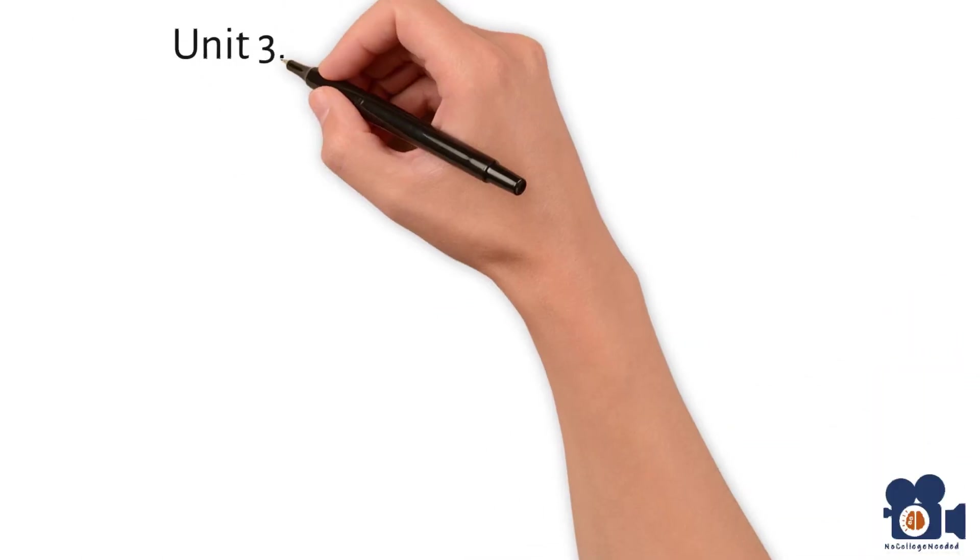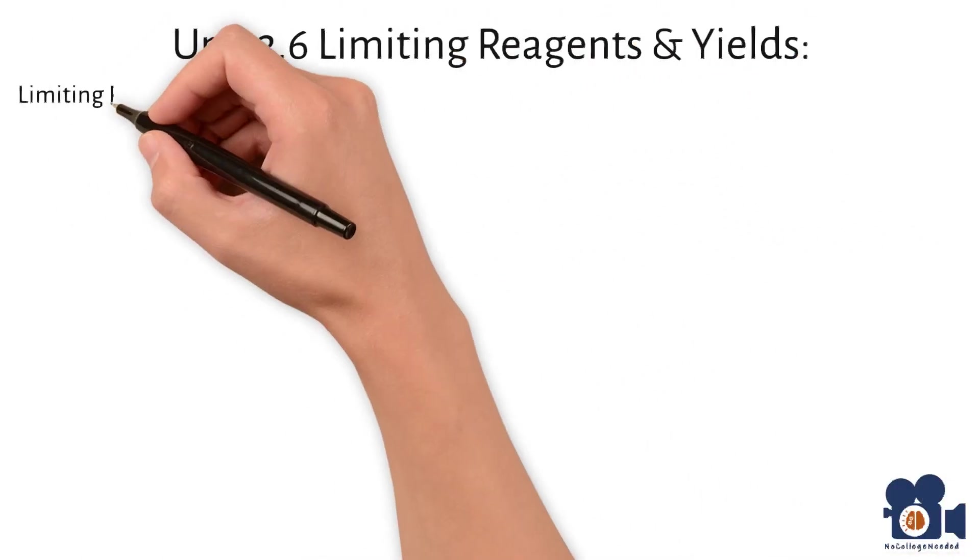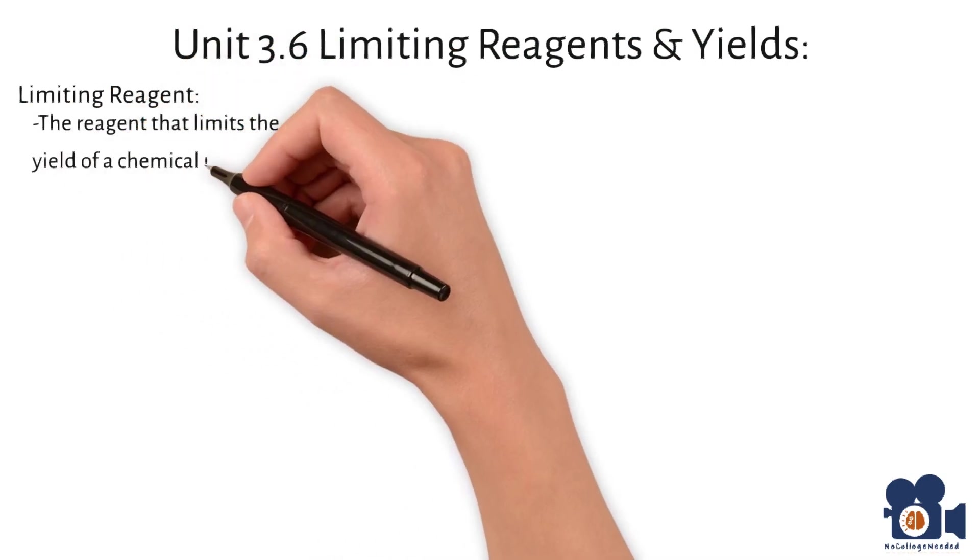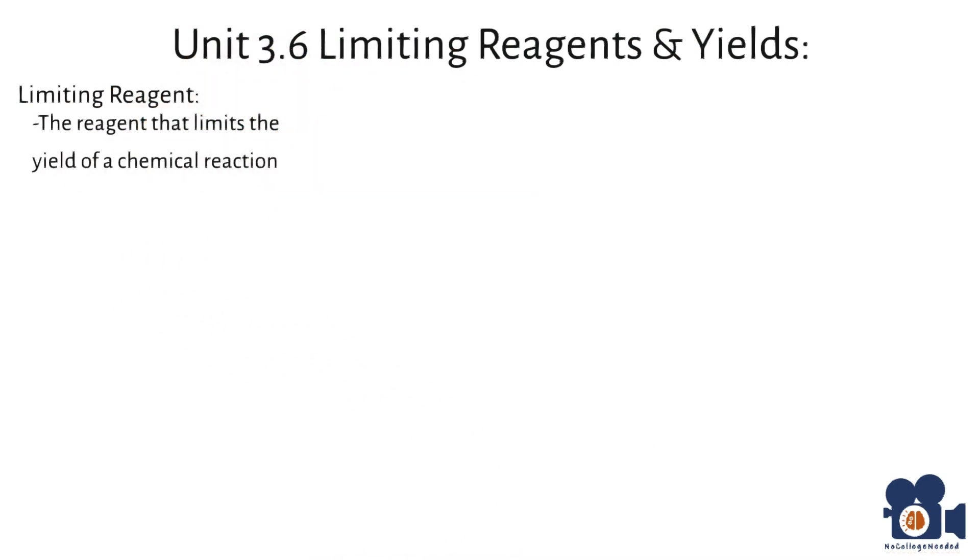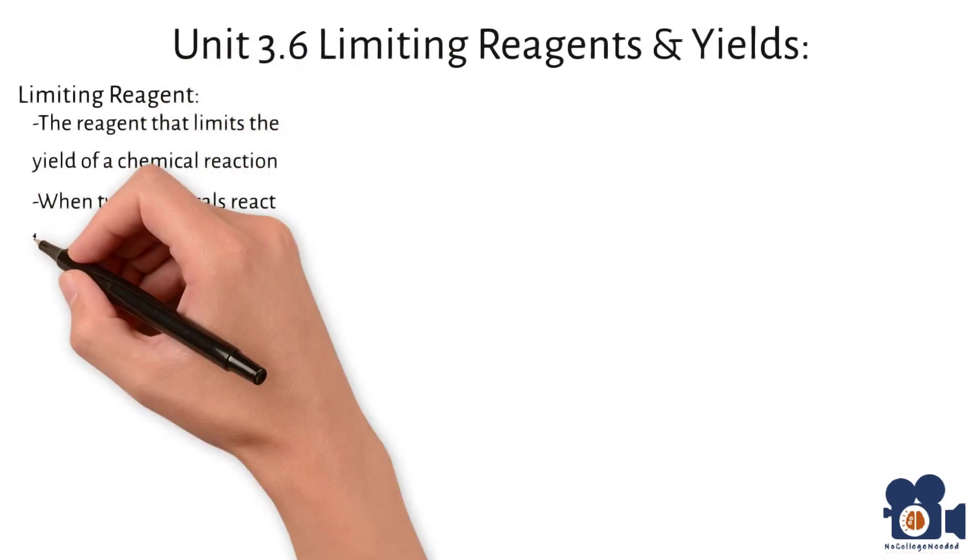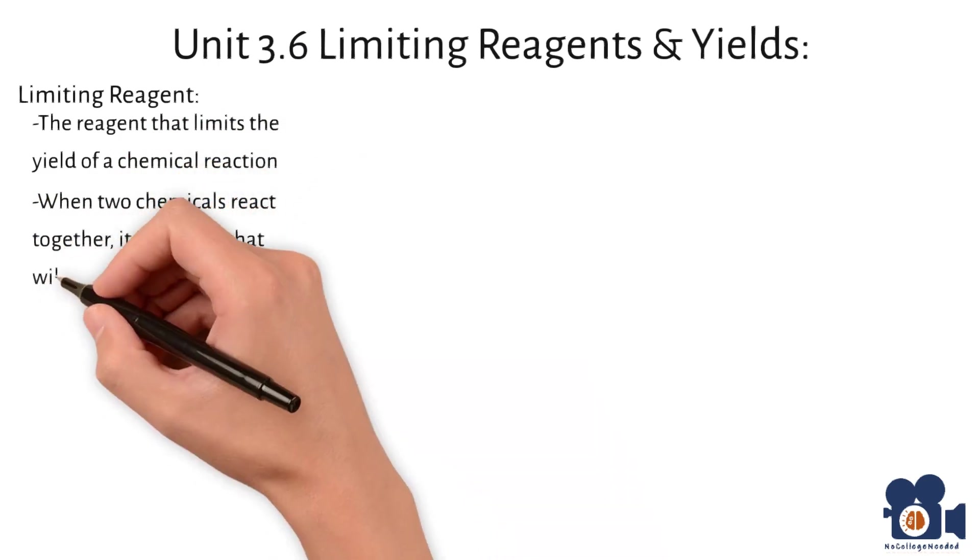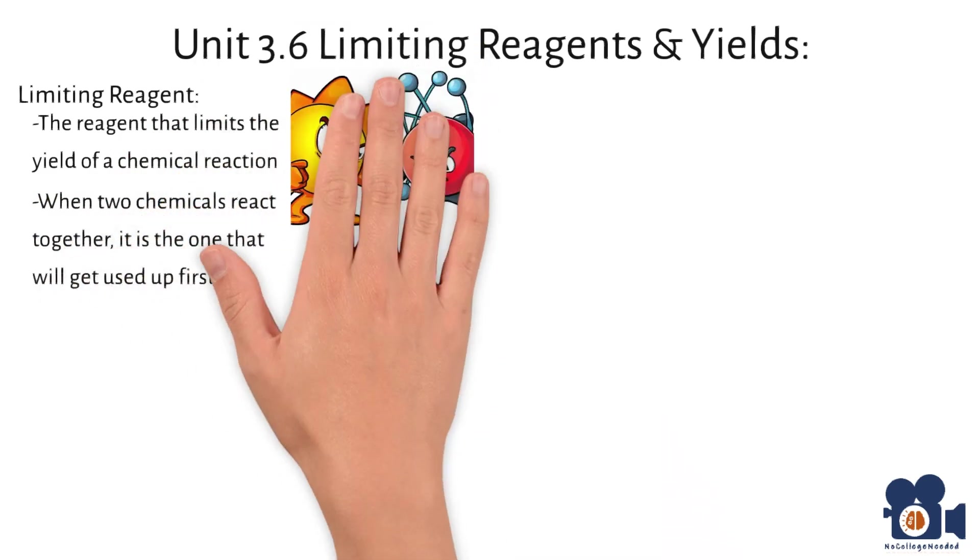Unit 3.6, limiting reagents and yields. A limiting reagent is the reagent that limits the yield of a chemical reaction. Another way to think of it is when two chemicals react together, it is the one that will get used up first.